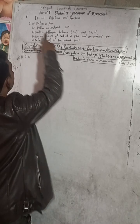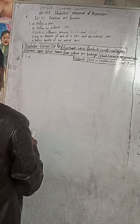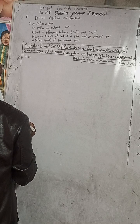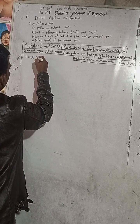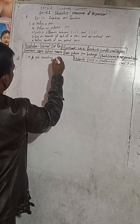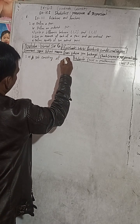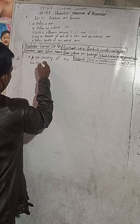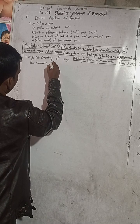Now the question is here: 1a — Define a Pair. So, solution number 1: a set consisting of any two elements is called a Pair.